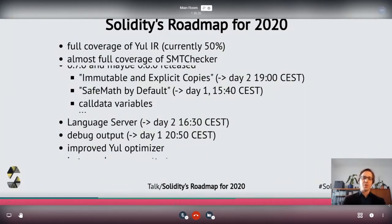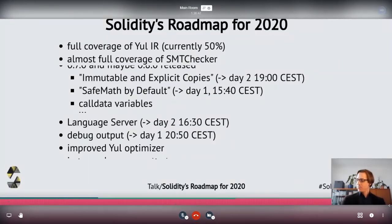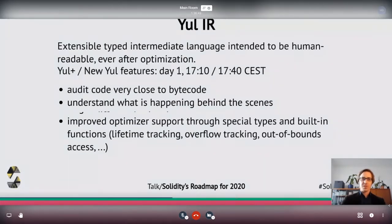Two things we always do in parallel regardless of specific features are improving the new Yul-based optimizer and improving the WebAssembly output. These two are kind of interconnected. Let's go a bit more into detail about Yul, because there are still some misconceptions around Yul.